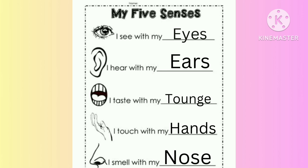There are five sense organs. What are they? Eyes, ears, tongue, hands, nose.